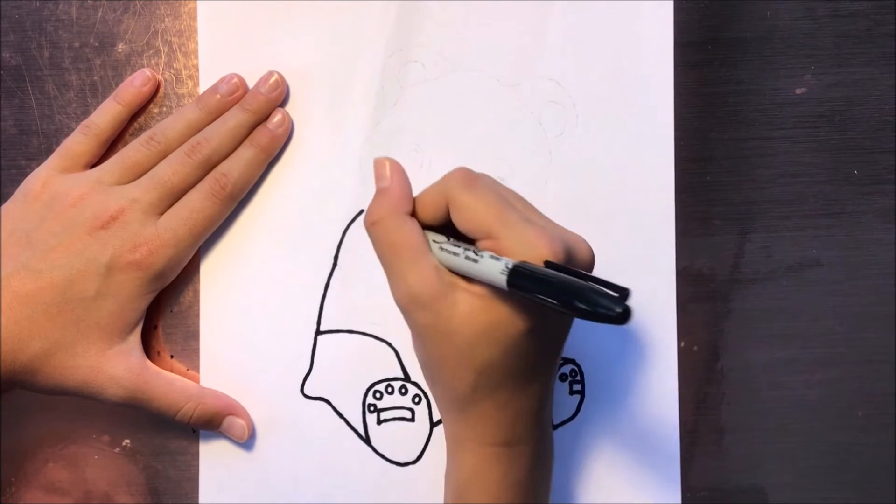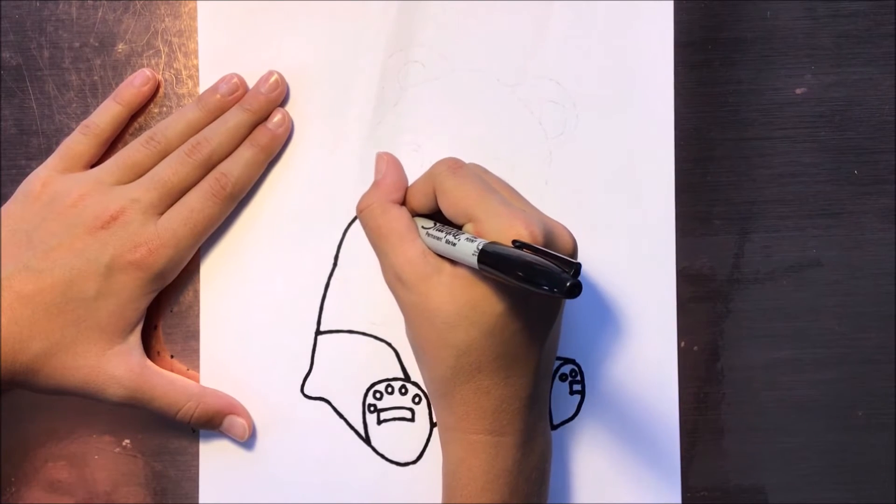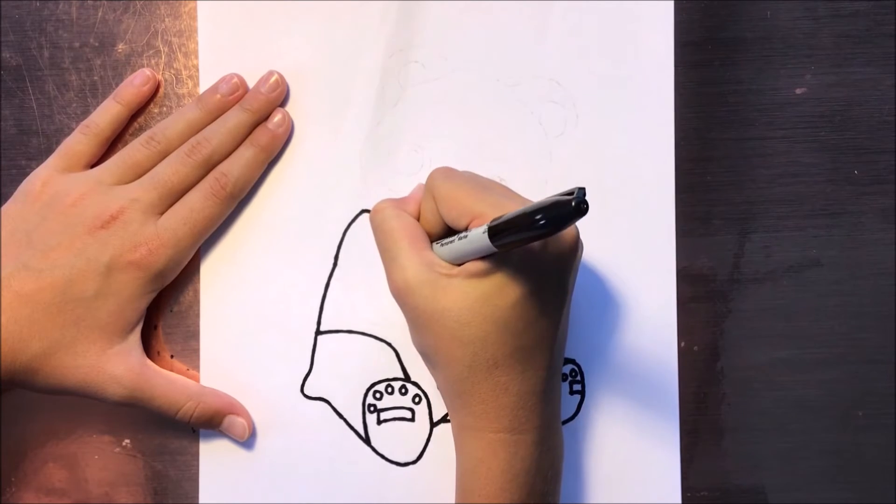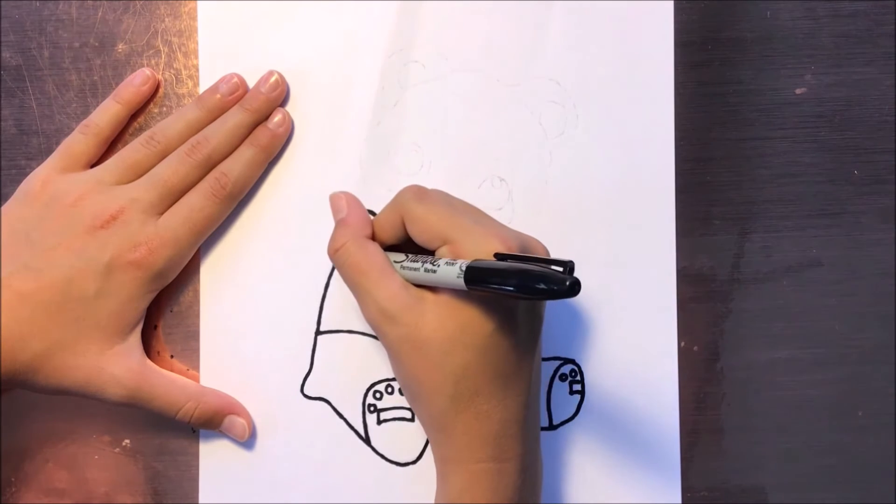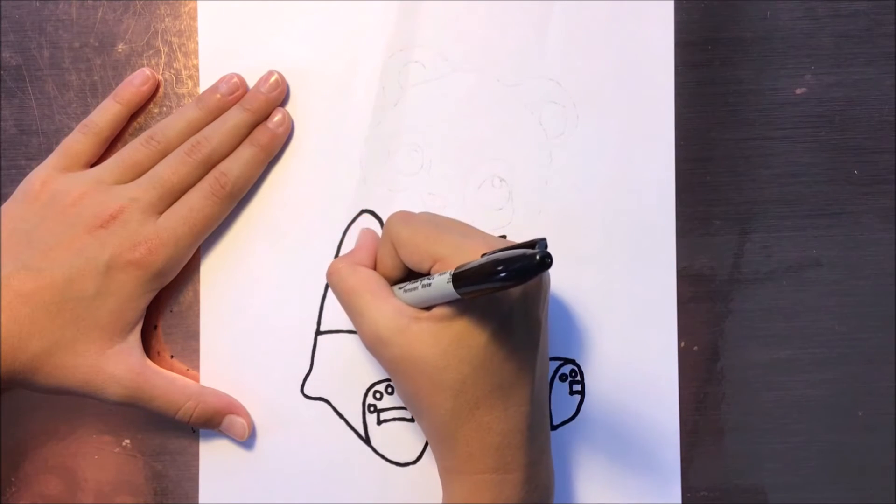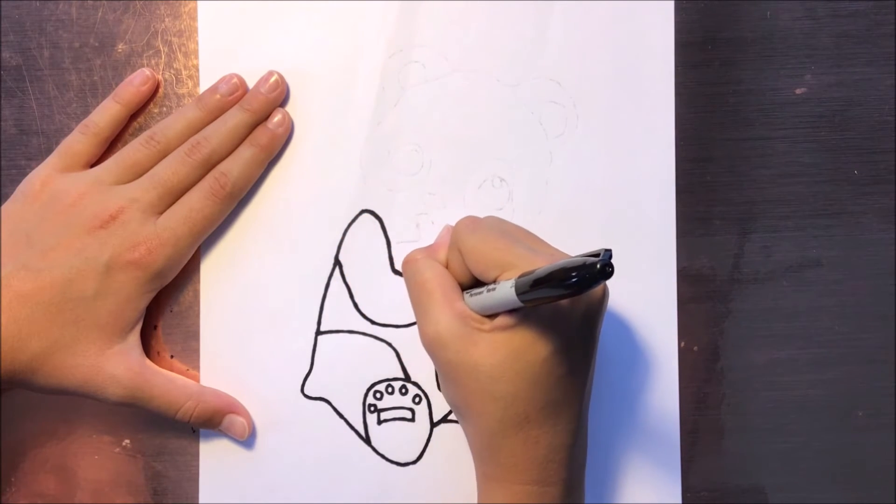But first we'll do the other arm. It's just going to curve in like this and then down. You're going to join those two lines, then go like this and connect.